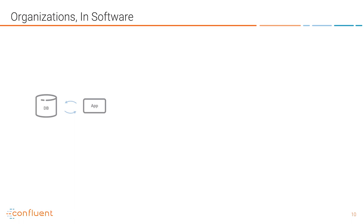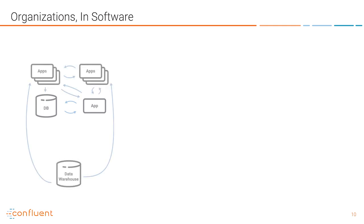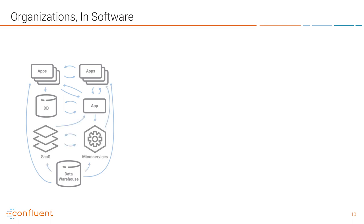Infrastructure technology has mostly focused on how to build one application — how to build a data store that services one app. But if you think about how a company is built, it's much more than this. It's hundreds or thousands of applications and hundreds of thousands of databases, data stores, or data warehouses. Our data is sharded over all of these and they have to interconnect to create the company. And modern architectures aren't simplifying this — including the introduction of SaaS applications and microservices, which are causing even more fragmentation of data.